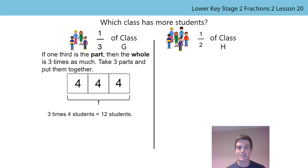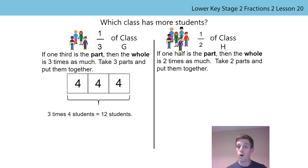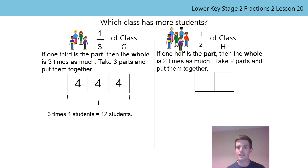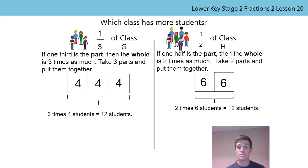Now let's look at class H. If one half is the part, then the whole is two times as much. So we take two parts and put them together. Six children go in each part, so two times six students equals 12 students. So in this case, class G and class H have the same number of students. Neither child who predicted at the beginning was right. I hope your working looks like mine.